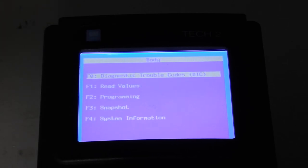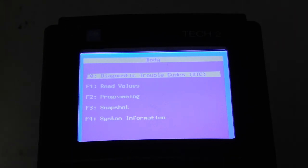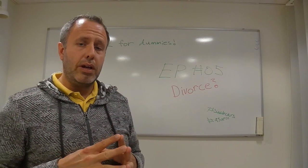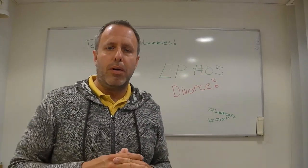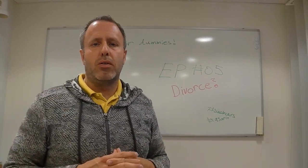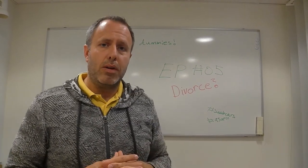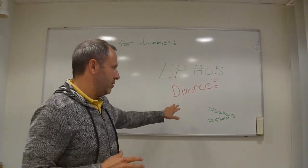That's basically it to divorce such a device as the CD changer. There are other devices in the car that can be handled the same way — either marriage or divorce. That was today's video of Tech 2 for Dummies episode 5, all about the divorce of different components in the car. The CD changer is just one of them; there are other components that need to be divorced as well.